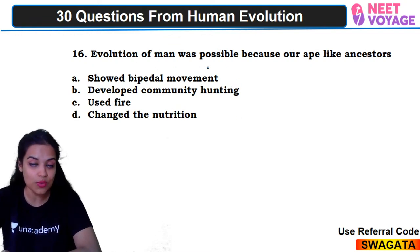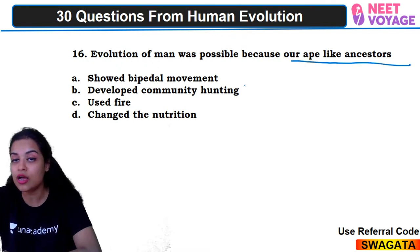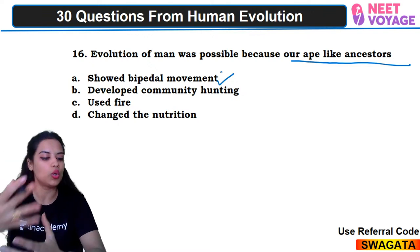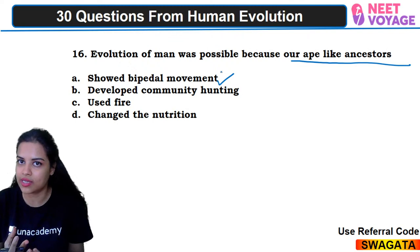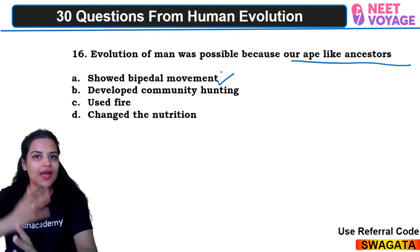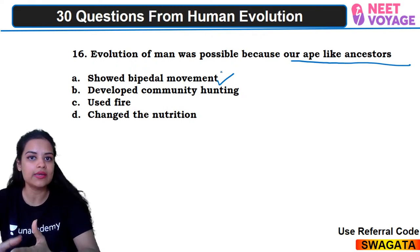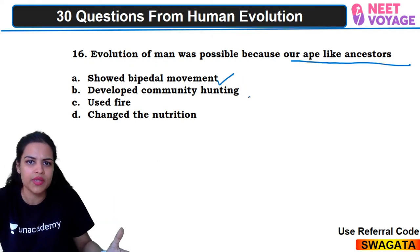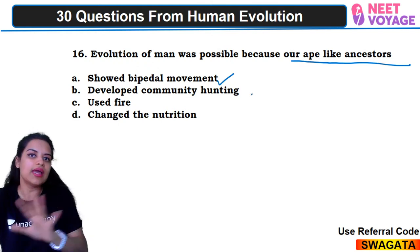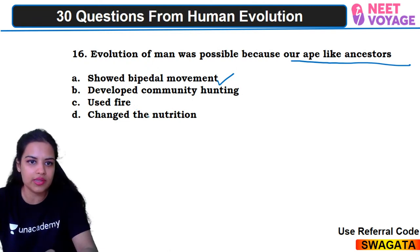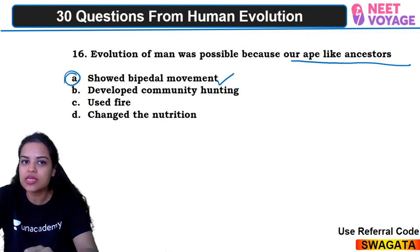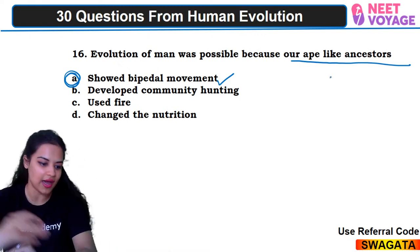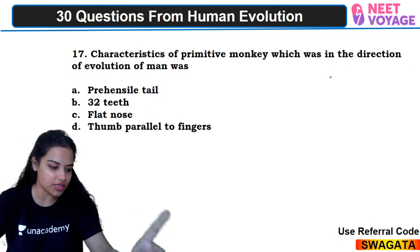Sixteenth question: evolution of man was possible because our ape-like ancestor did what? The answer is they showed bipedal locomotion. Our ape-like ancestors — Dryopithecus and Australopithecus — started walking on two legs, which made human evolution possible. All humans now show bipedal locomotion. So A would be the right answer. Ramprasad and Chandrasekhar answered correctly.